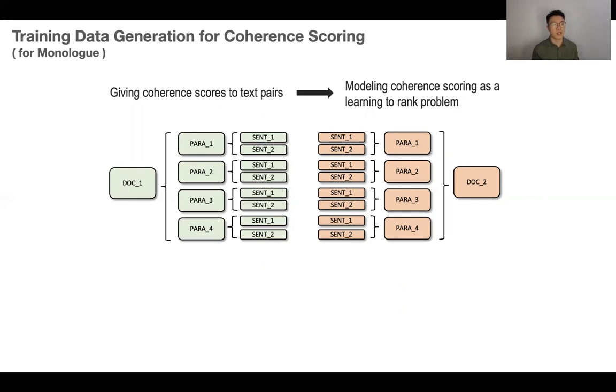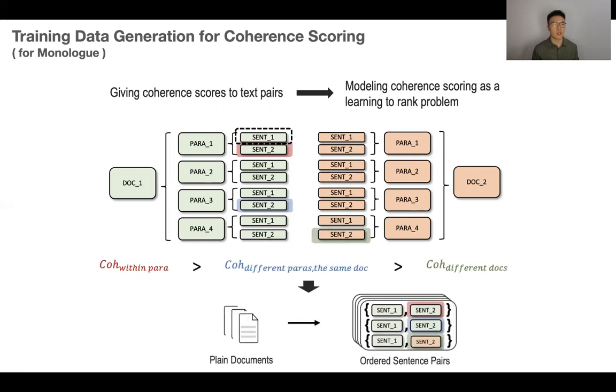When selecting a sentence, like sentence 1 in document 1 in this example, we can subsequently sample three other sentences to form the sentence pair. They are within the same paragraph, from different paragraph but still in the same document, and from different documents. Then, naturally, the ranking of the text-pair coherence should follow. With this assumption, we can generate numerous text pairs with ordering labels from plain documents and train a coherent score prediction model to fit the ordering labels.